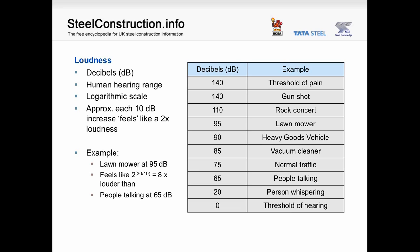The decibel scale reflects the human ability to hear and starts at zero, which is the threshold of human hearing. It is a logarithmic scale, which means that small increases in decibels can be very significant. For example, a 10 decibel increase in sound can actually feel like a doubling in sound level to the human ear. Listed on the slide are several everyday activities and their associated sound levels: people talking at 65 dB and a lawn mower at 95 dB. The 30 dB difference can actually feel like an eight times increase in sound level due to the logarithmic scale.